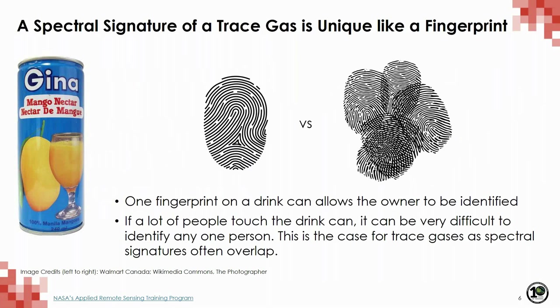However, even though each trace gas has a distinct spectra or fingerprint, we are rarely, if ever, observing only a single trace gas. The figure here represents this — you're never looking at just one fingerprint on something. You have multiple fingerprints, and just like these multiple fingerprints, spectral signatures will often overlap.